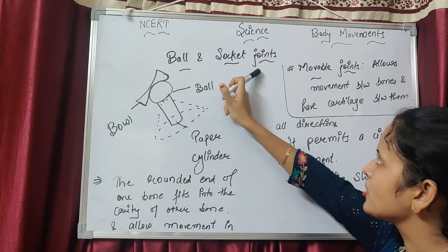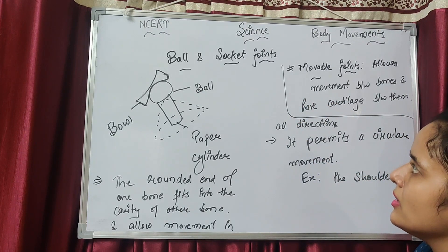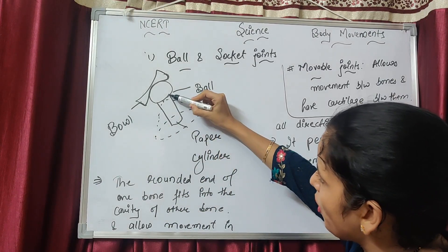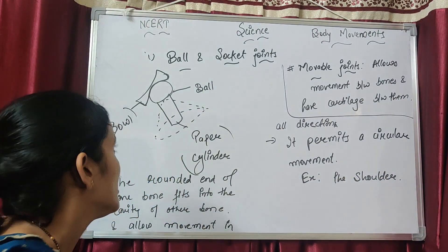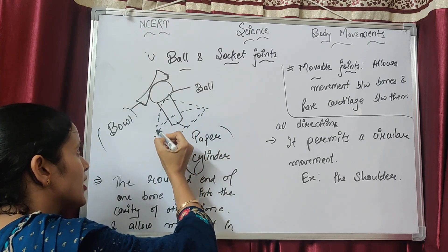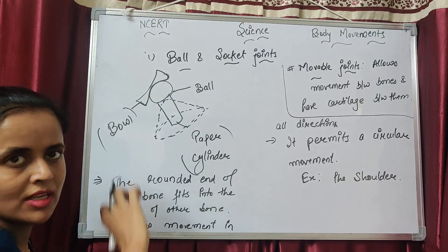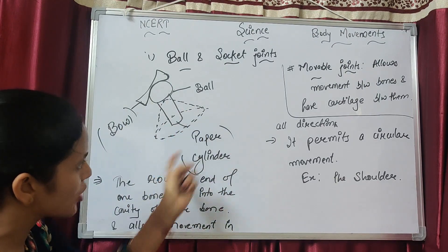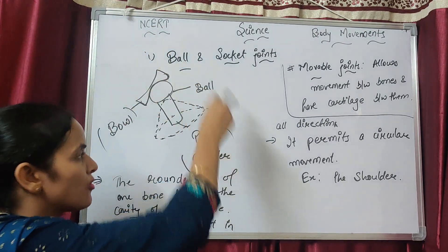Under movable joints, there are four to five types. The first is the ball and socket joint. Look at this diagram — this is the ball, and this is the socket or cavity. The ball and socket joint works in a circular motion, as shown by the dotted line in the diagram. The bone moves in a circular motion inside the cavity.